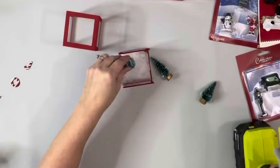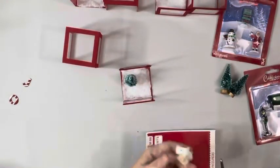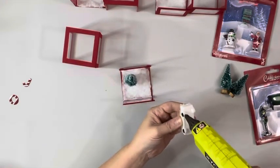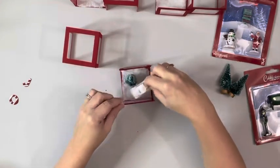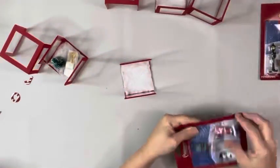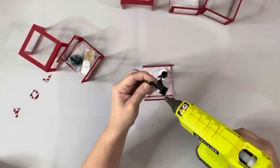Then I took some different little pieces that I had. These trees were from Hobby Lobby, these little trucks were ornaments from Walmart, and I just added different ones to each cube. So one of them I just did a tree and the little truck and then these little figurines from Dollar Tree.